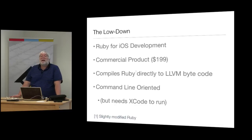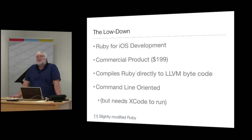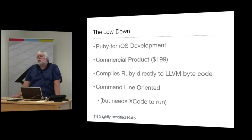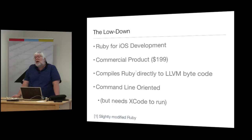RubyMotion is command-line oriented - you type things at the command line and it runs from there. It is not IDE-based, though there are some IDEs for it. To use it, you need the RubyMotion product itself, a recent Ruby installation like 1.9 or 2.0 on your Mac for the build tools, Xcode for the libraries and SDK, and an Apple developer license if you want to deploy on real hardware.